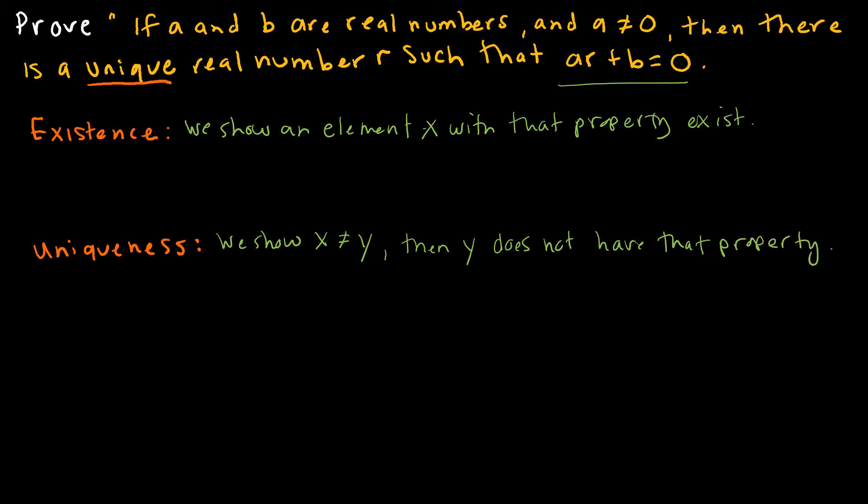If I start by saying let r equal negative b over a. I used that because I rearranged this to solve for r, because I wanted r to be true. Then r is a solution to ar plus b equals 0. I knew it was a solution because that's where it came from.